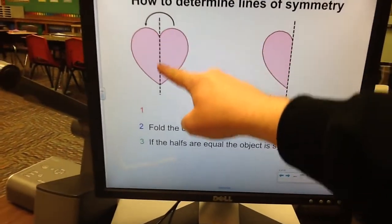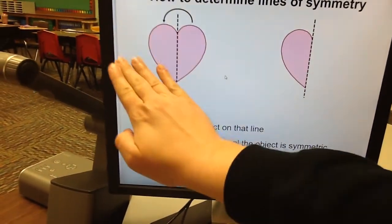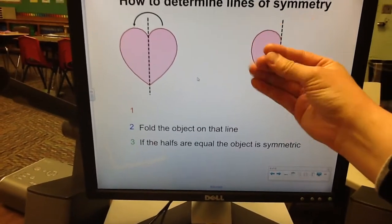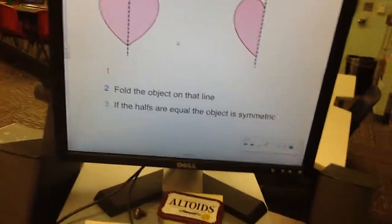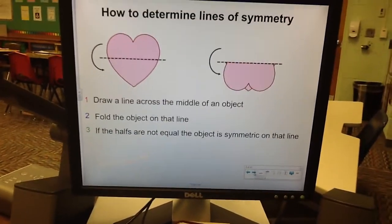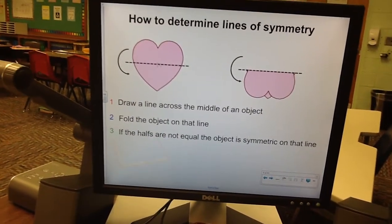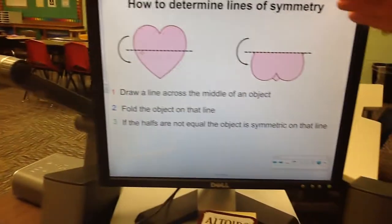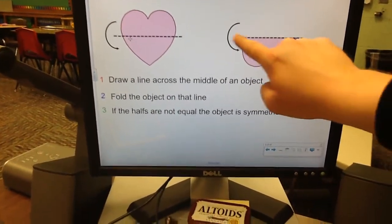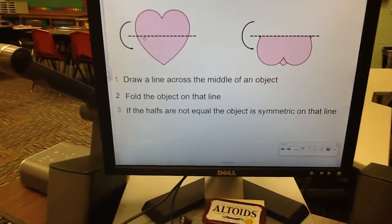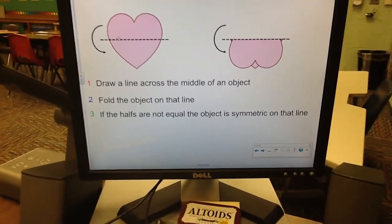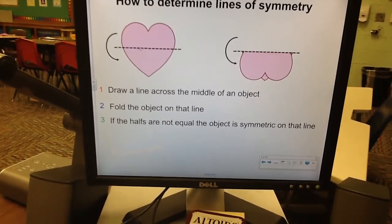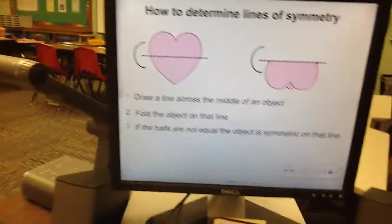In this heart, we can draw a line right down the middle, we can fold it over, and it would look like this. There's no parts that are overlapping. Both parts, when you fold it, are equal. When you draw a line this way, across the middle this way, and you fold it down, look, it doesn't match equally. So that is not equal and it is not symmetric. This line that I'm showing you right here is not a line of symmetry.